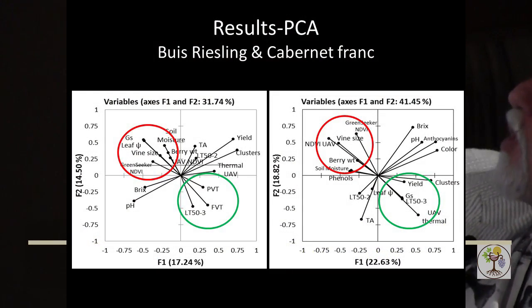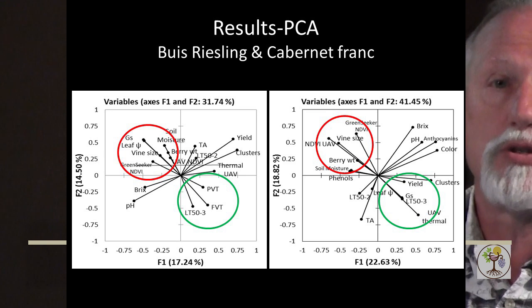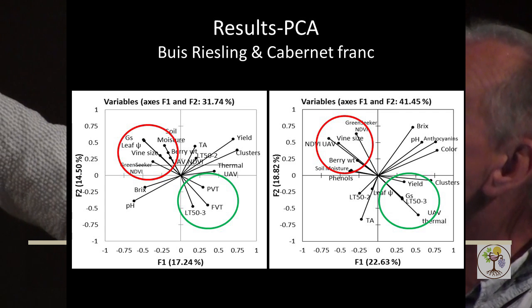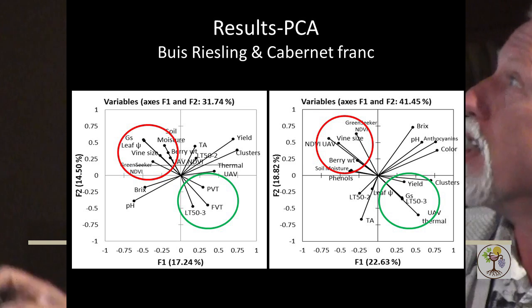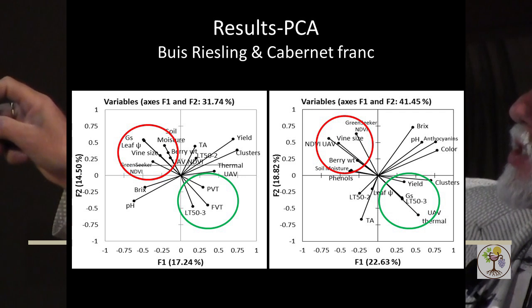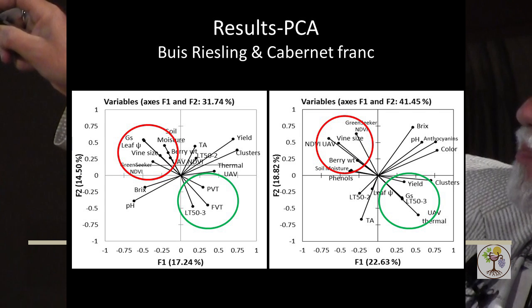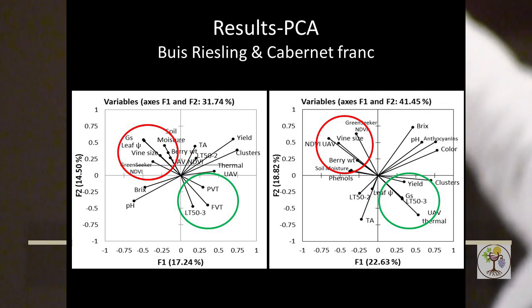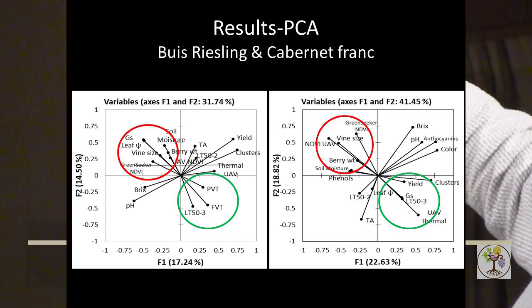The bulk of this talk covers six PCAs. The red zone — as I'll call it — includes the UAV data and any other variables very closely correlated with UAV. In the case of this first vineyard, which is a lakeshore vineyard, we're seeing things such as leaf water potential, vine size, and soil moisture — probably nothing that surprises you. In terms of inverse correlations, what we were quite happy about is we're getting some inverse correlations between that and both free and bound terpenes in the Riesling, as well as LT50 and thermal.